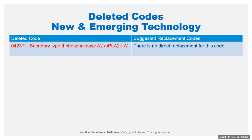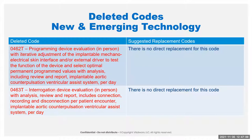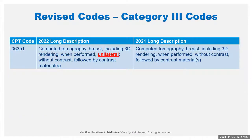Deleted codes: we have one with no direct replacement. One deleted code I always thought was weird as a Category 3 anyway since it was a lab test. We also deleted the programming device evaluation for the mechanical electrical skin interface. There's one revision — a clarifying statement that a particular service is unilateral, so if done on both breasts, it would warrant a 50 modifier or two-line reporting depending on what your payer wants. And that is finally it.